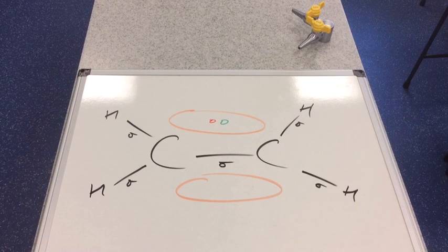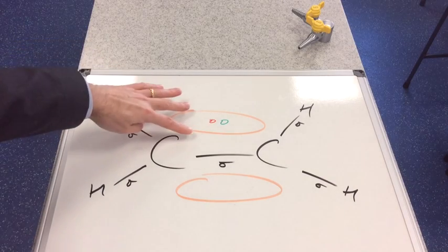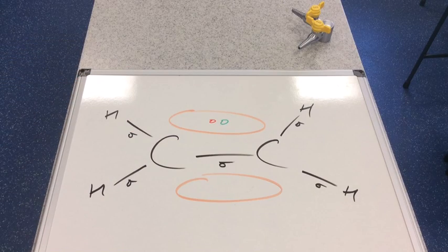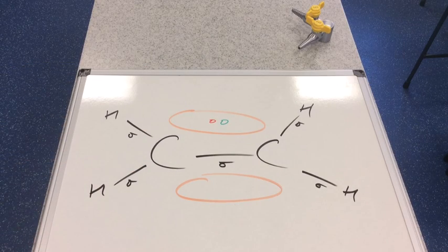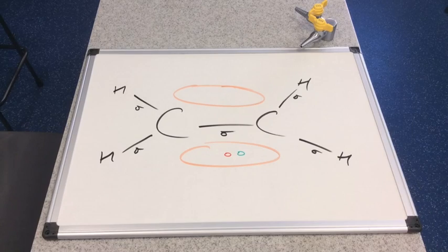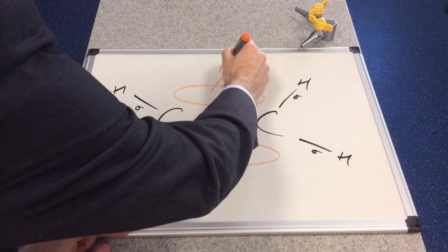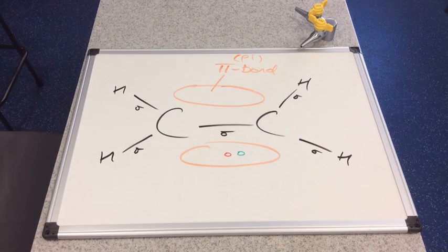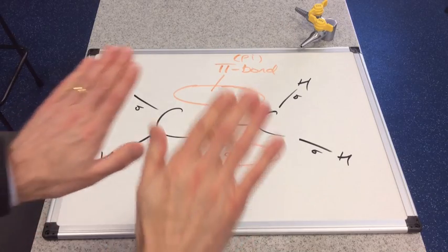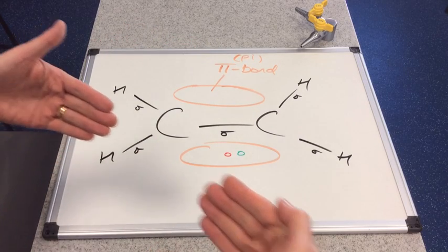So I've tidied the diagram up again now. And we have these new regions of space here. So at the moment, I've got the two electrons in the upper part of the new orbital. So the electron pair could either be up there or they could be down there. Because this bond was formed in a different way to the sigma bond, we don't call it a sigma bond. It's called a pi bond. So pi bonds are formed when two p orbitals overlap side to side. Whereas sigma bonds are formed when two orbitals overlap end to end.